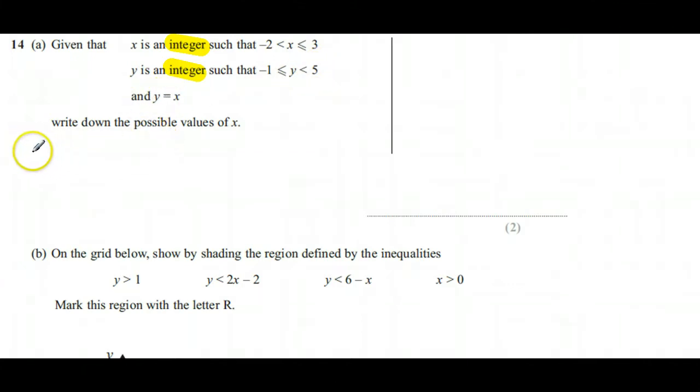Well, let's start with x. It can't be negative 2, so the lowest it could be is negative 1, and then we go through the integers up to and including 3 because of this less than or equal to sign.